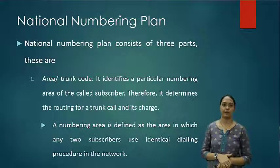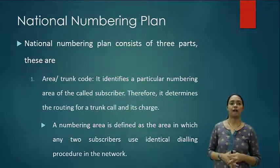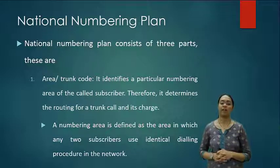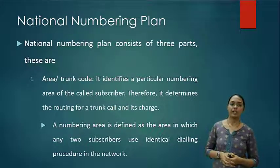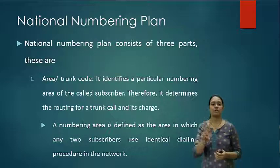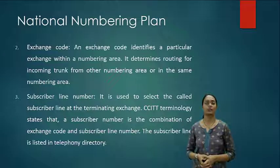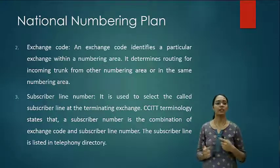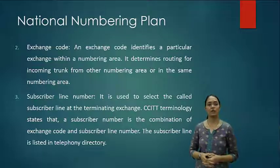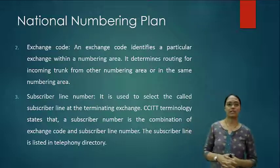The national numbering plan consists of three parts. The first one is area or trunk code. It identifies a particular numbering area of the call subscriber and therefore determines the routing for a trunk call and its charge. A numbering area is defined as the area in which any two subscribers use an identical dialing procedure in the network. The second part is exchange code. An exchange code identifies a particular exchange within a numbering area and determines routing for incoming trunk calls from other numbering areas or within the same numbering area.